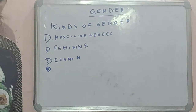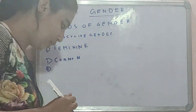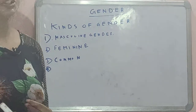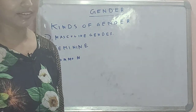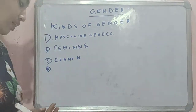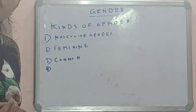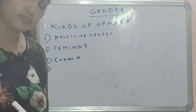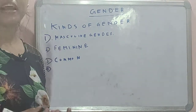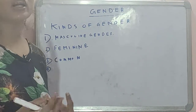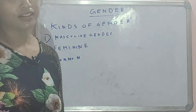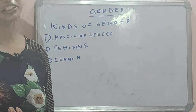Now, neuter gender. What is neuter gender? A noun which denotes neither male nor female — just the opposite of common gender — is known as neuter gender. For example: book, pen, table. Basically, all non-living things denote neuter gender.